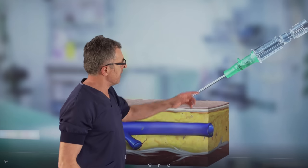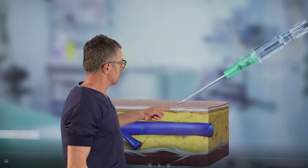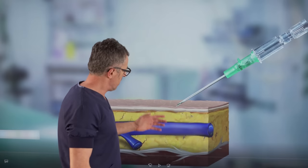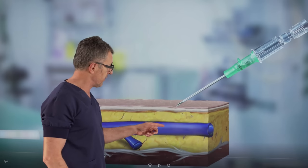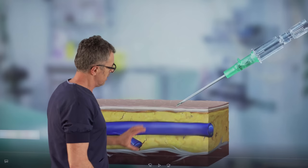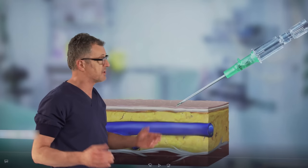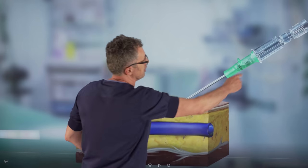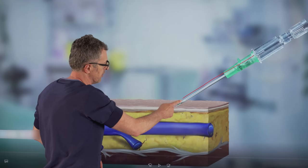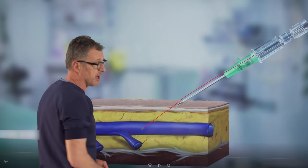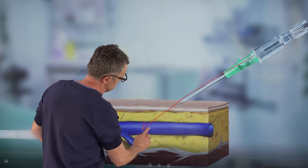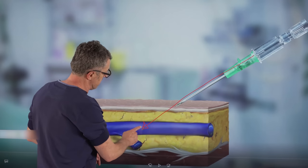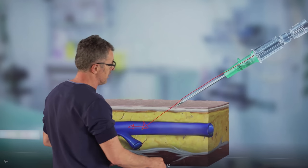So what we have here is the catheter over the needle system or an IV. We have a sample of the tissue with a peripheral vein underneath the dermis settled in the subcutaneous tissue. Typically, you would like to place your needle with the catheter into the vein.